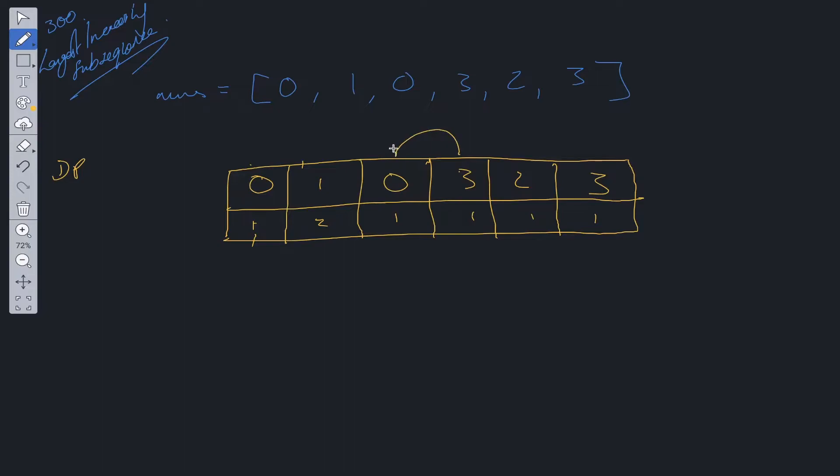Is 3 greater than 0? Yes it is. So we can look at this value here and compare it to this value plus 1. Which is greater, 2 or 1? So we can update this to 2. Then we compare 3 to the value before that.